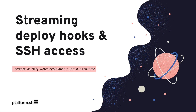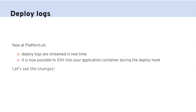This month at PlatformSH, we're pleased to announce streaming logs from your deploy hooks and SSH access to your environments during deployments. Previously, logs generated from your PlatformSH deploy hooks were only available after deployment finished, and SSH access was blocked during that time as well. Now your deploy logs are streamed in real-time, and it is possible to SSH into your app containers during deployments.